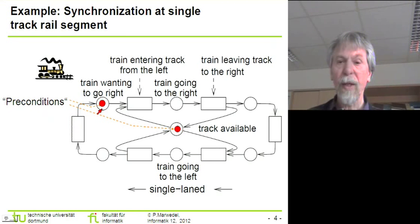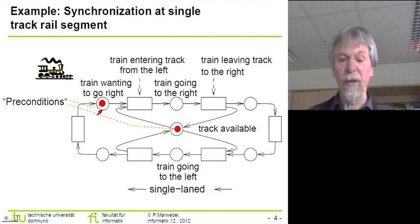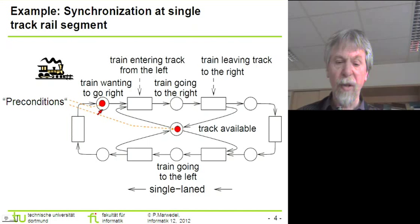Also we can place a token on another condition, which symbolizes the fact that there is a train that could go to the right. Also we have an event. This event reflects a situation in which a train is entering the track from the left to the right.